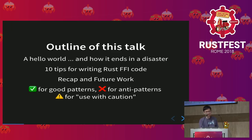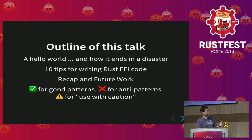Through all the code examples in this talk, if you see a green checkmark, it means this is a good pattern and we recommend using it. A red crossmark means it is an anti-pattern — not good to use. A warning sign means a pattern to use with caution because it may involve some unsafe code and assumptions you must be aware of before you use it.